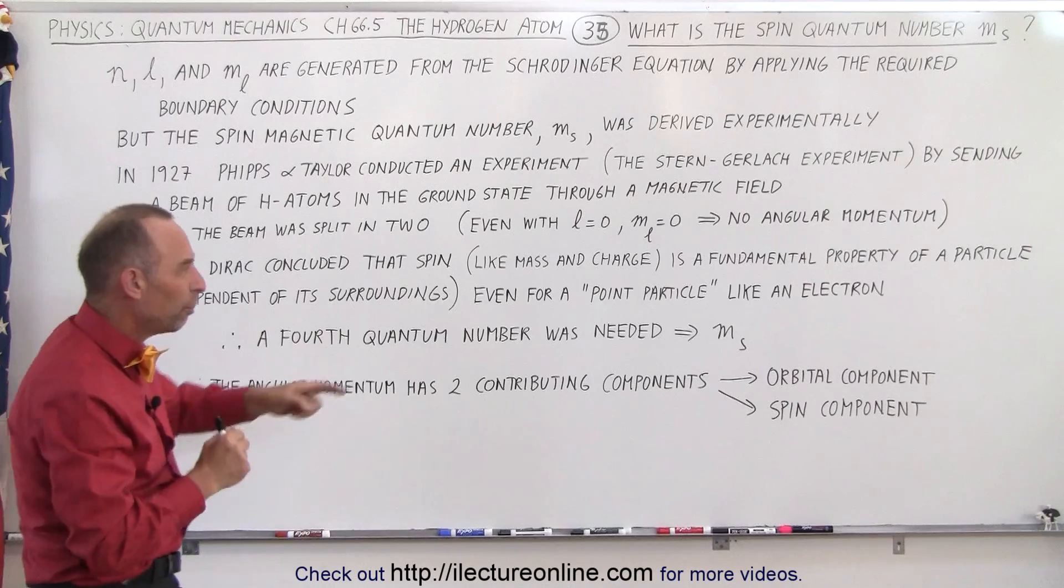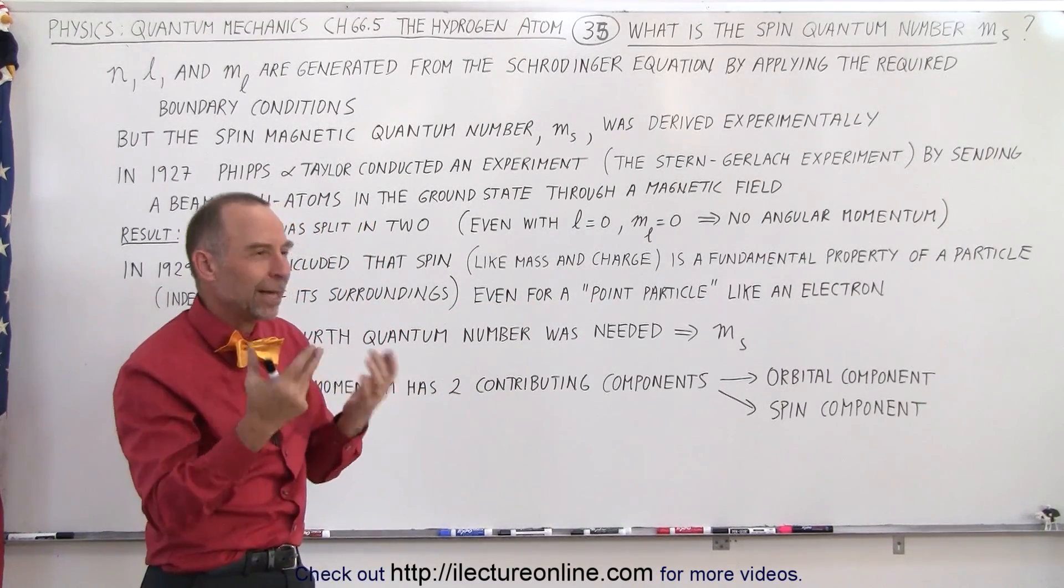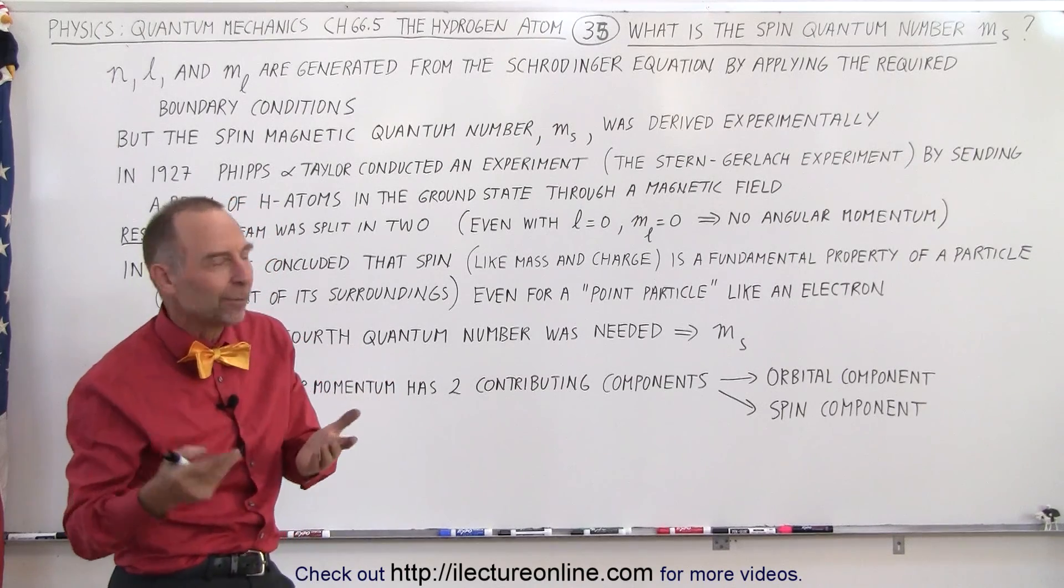So that means that even for a point particle, because the electron is so minute in size, the diameter is somewhere in the neighborhood of 1 times 10 to the minus 18 meters,